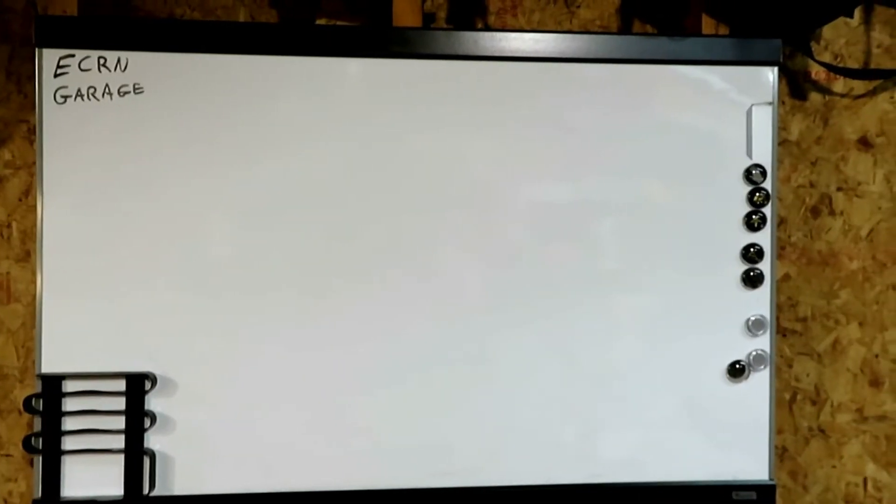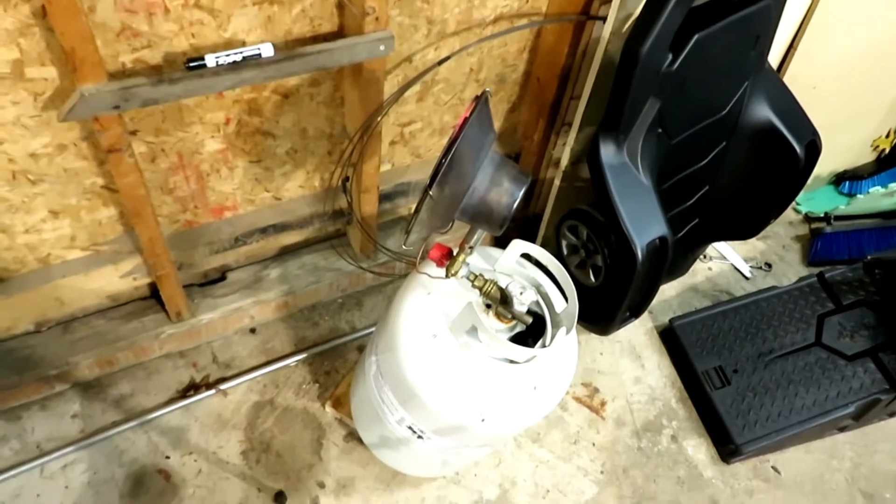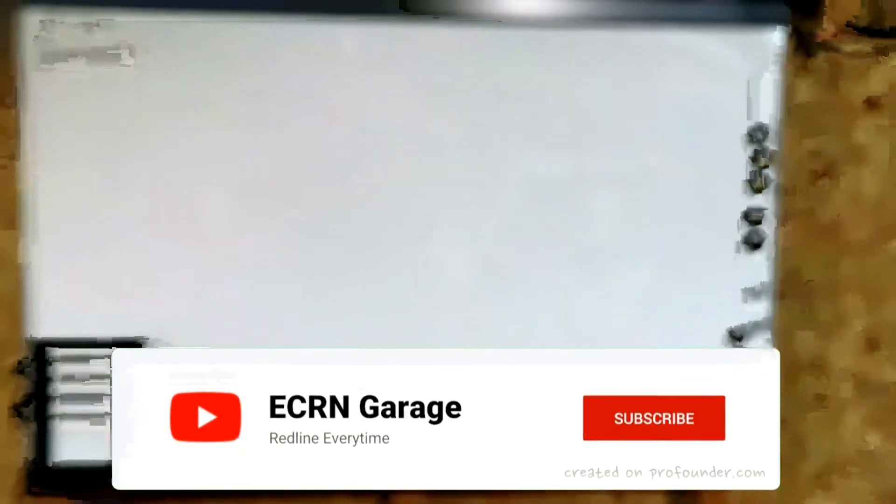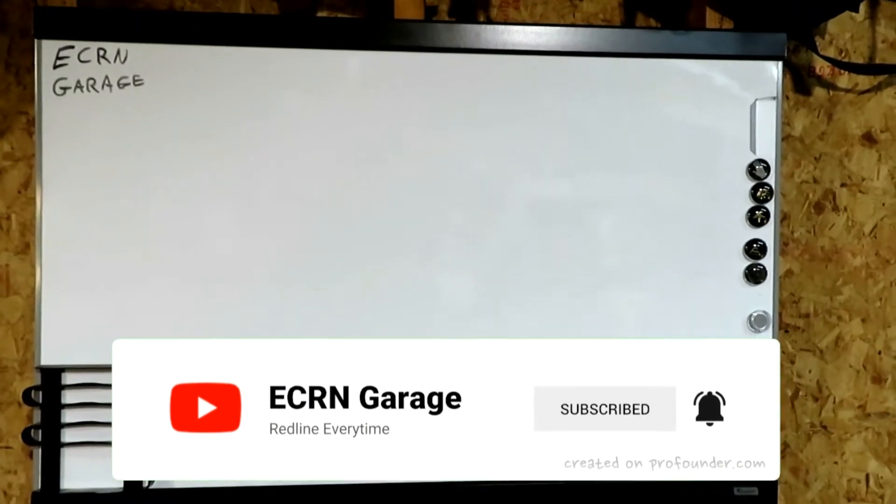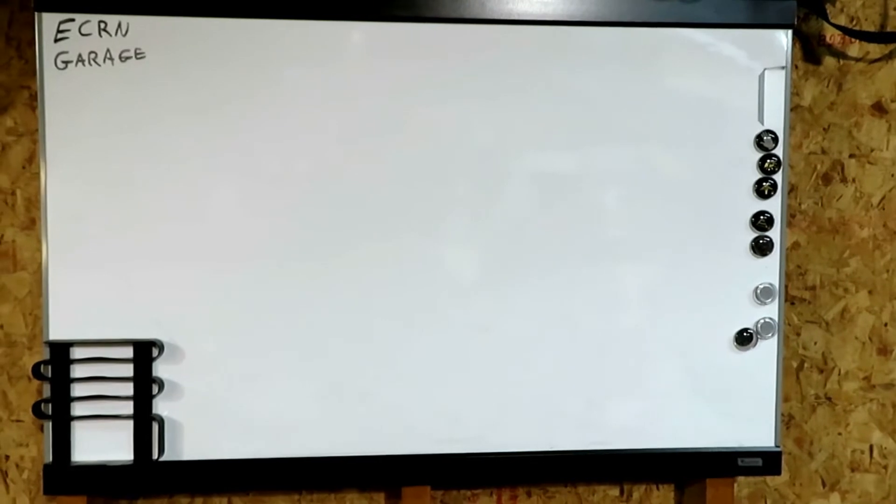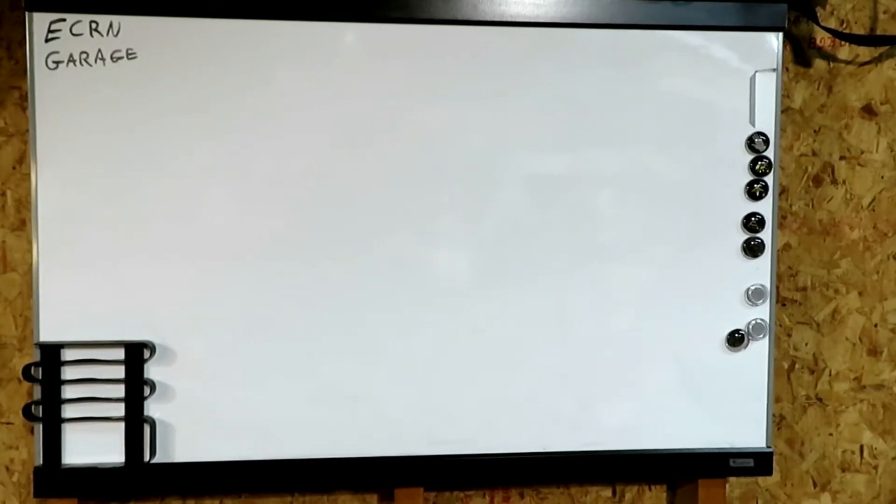This time on ECRN Garage, we're going to go over how to install the Moto Gadget wire-by-wire that I did on the chopper. It's so cold out here, minus 13 in Halifax County. I had to put the heat on my whiteboard because the dry erase markers wouldn't even write on it. This might be a slow process, but I'll start today and might do this in a few parts.